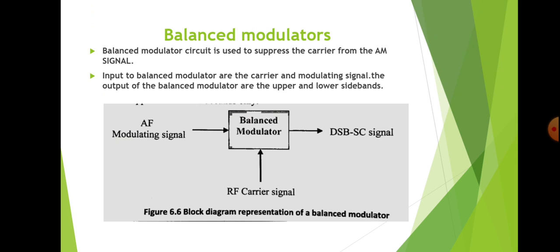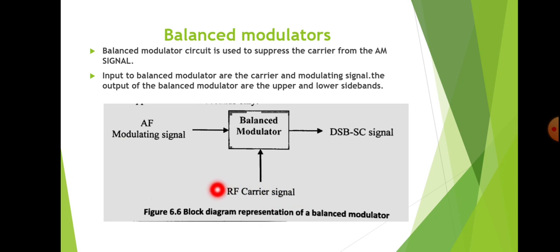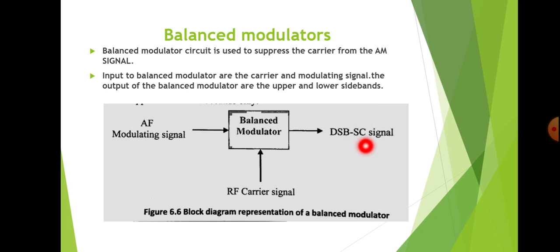The input to the balanced modulator are the carrier signal and the modulating signal. The modulating signal is represented as AF, that is audio frequency — its frequency is lower. Similarly, there is a carrier signal whose frequency is high, that is why it is given as RF, that is radio frequency. Both of these signals are given to the balanced modulator, and as a result, it will produce a double sideband suppressed carrier AM signal — the carrier is suppressed at the output.